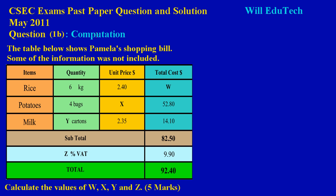The question states the table below shows Pamela's shopping bill. Some of the information was not included. We have the items under the first column on the left. She purchased rice, potatoes, and milk and the quantities are as follows: 6 and a half kilograms of rice, and the unit price is what she pays per kilogram. For each kilogram she would pay $2.40 and total cost here, so obviously they would want us to find W.